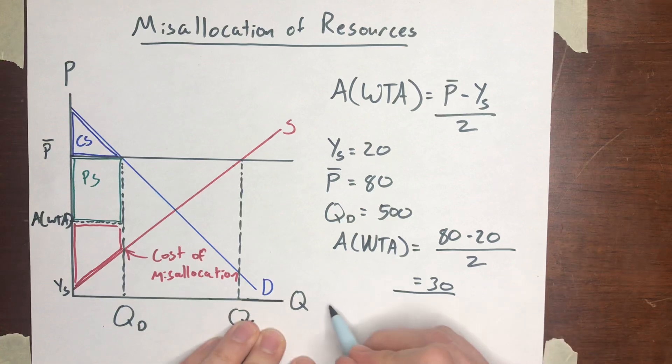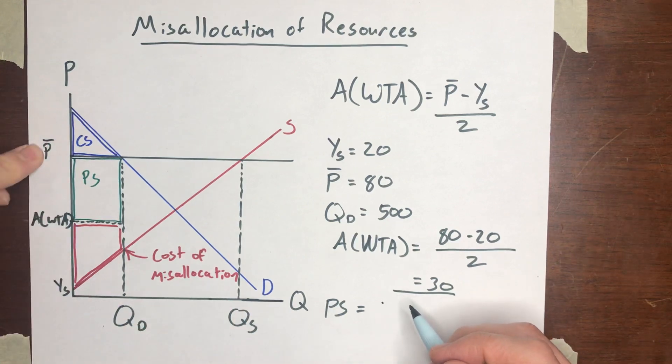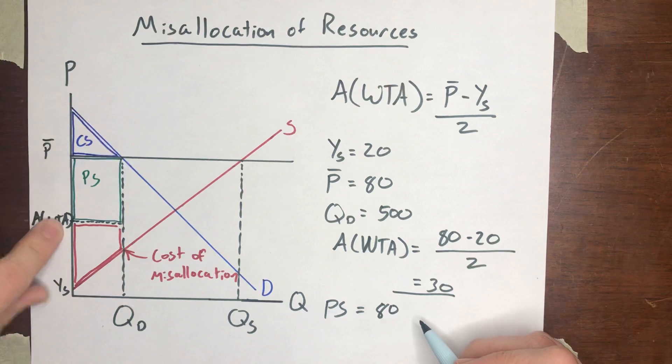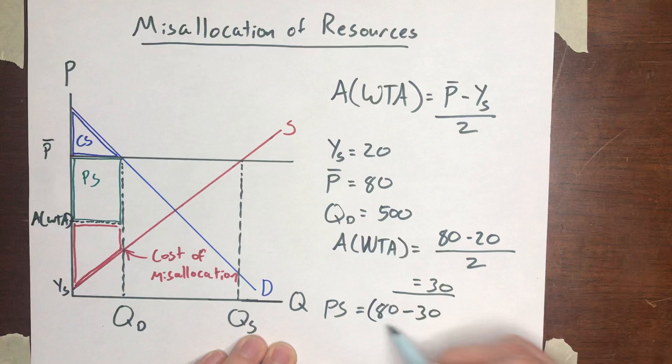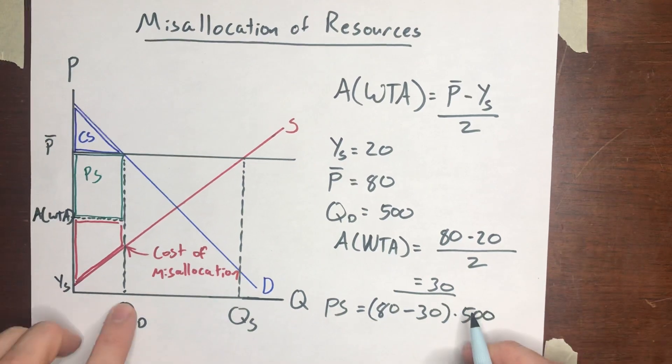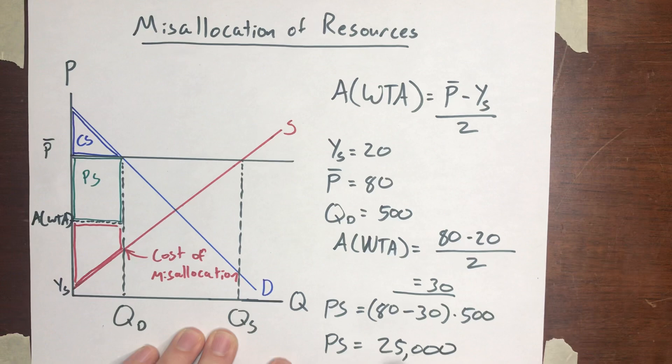Now the producer surplus will simply be the price, $80, minus that average willingness to accept, which we just calculated is $30. And we'll multiply that by the 500 units that are trading. Multiply by QD. Well, $80 minus $30 is $50. 50 times 500 is $25,000. So the producer surplus in this case would be $25,000.